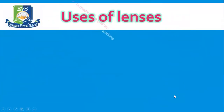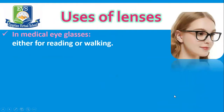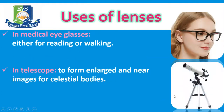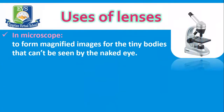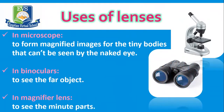Uses of lenses. Number one, they are used in medical eyeglasses either for reading or for walking. Number two, in telescopes to form enlarged and near images for celestial bodies. Number three, in microscopes to form magnified images for tiny bodies that cannot be seen by the naked eye. Number four, used in binoculars to see far objects. And finally, used in magnifier lenses to see small tiny parts.